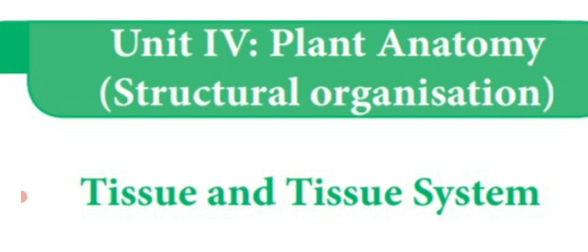Out of these three topics, we have seen Epidermal Tissue System in detail. Epidermal Tissue System is the outermost tissue present in the plant cell. It is a single layer, closely packed parenchyma tissue interrupted by minute openings called stomata. The leaf epidermis is differentiated into upper epidermis and lower epidermis. Upper epidermis is surrounded by a cuticle layer.